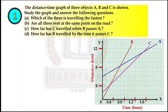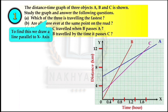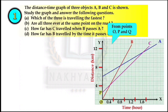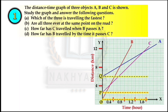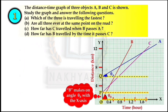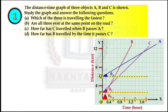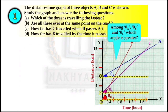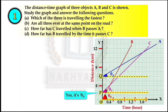Question 1: The distance-time graph of three objects A, B and C is shown. Which of the three is traveling the fastest? Drawing a line parallel to the x-axis from the origin, A makes angle θA, B makes angle θB, and C makes angle θC with the x-axis. Among these angles, θB is the greatest, so object B is traveling the fastest.